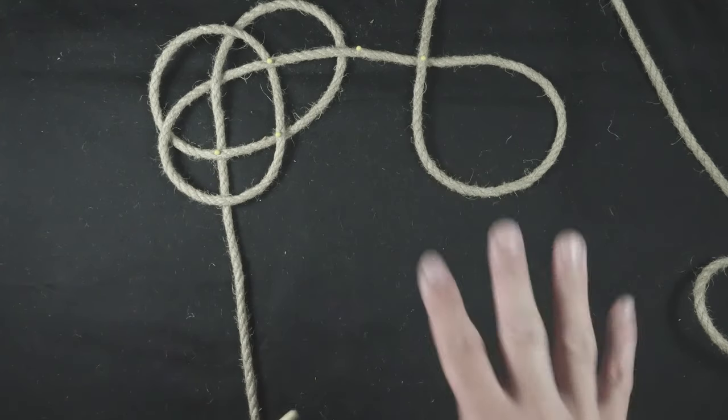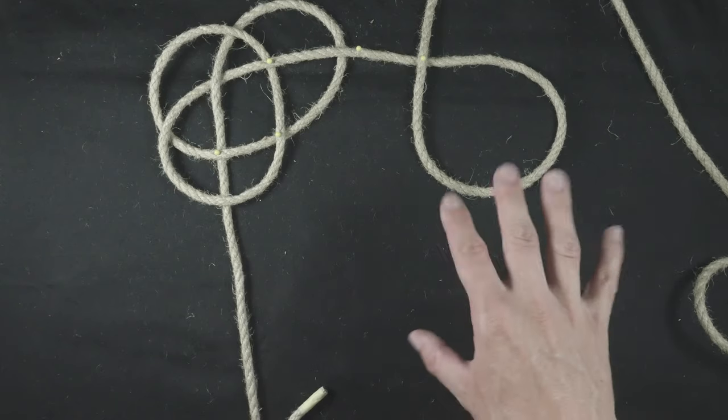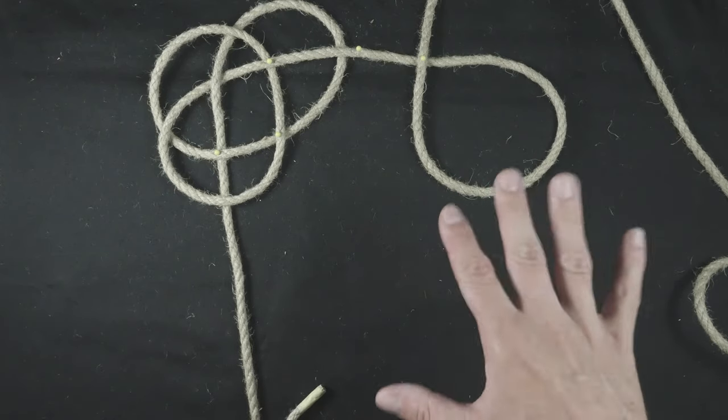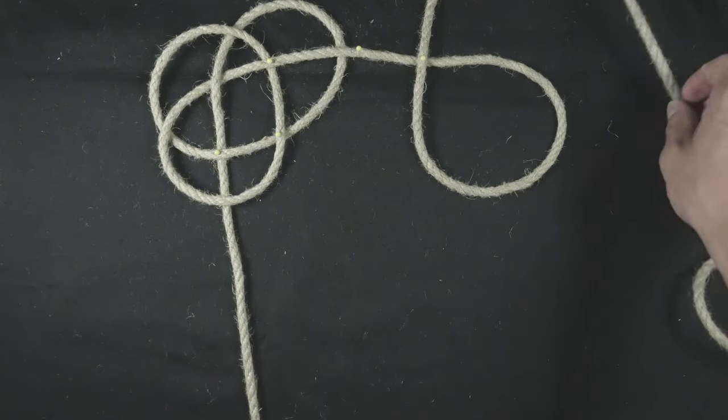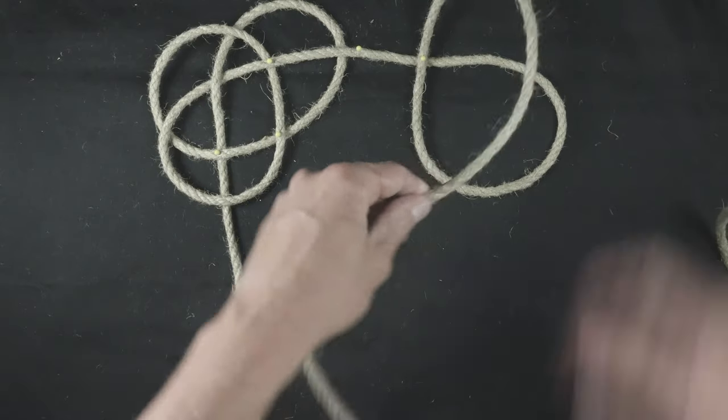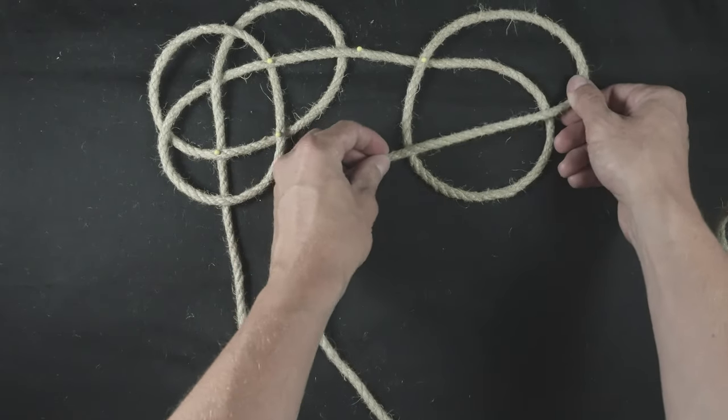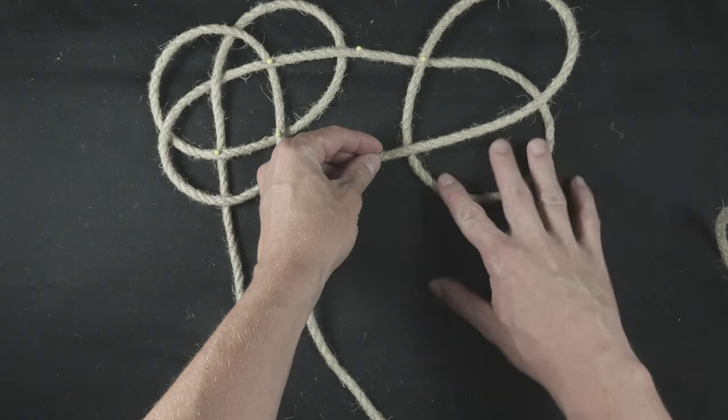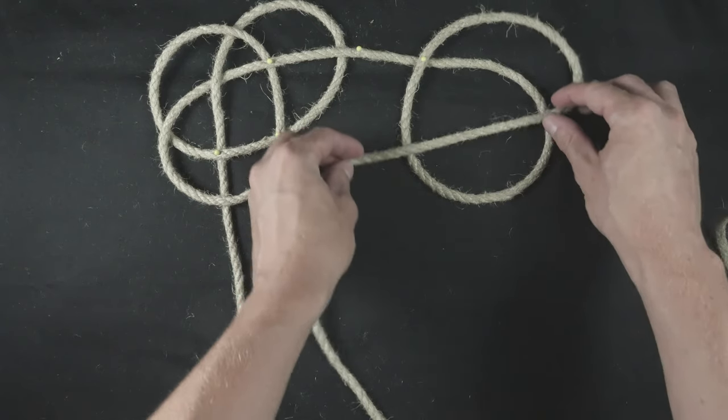On the right, we tie pretty much the same way, but in reverse order. So with the right end, we pass over our loop, so over two.